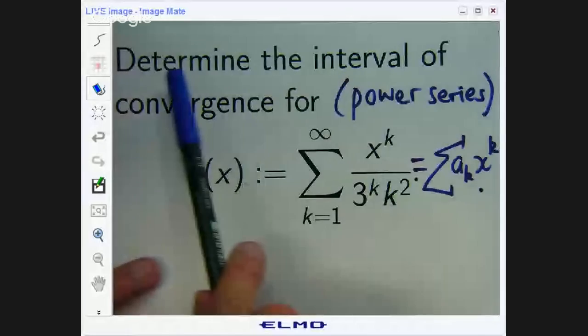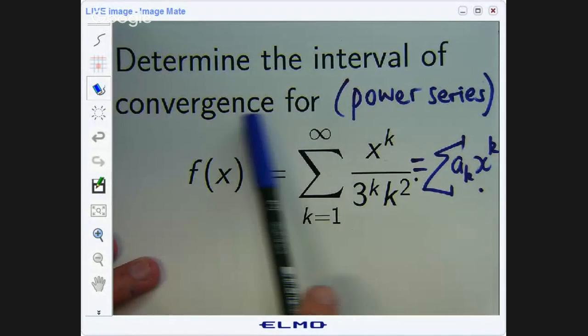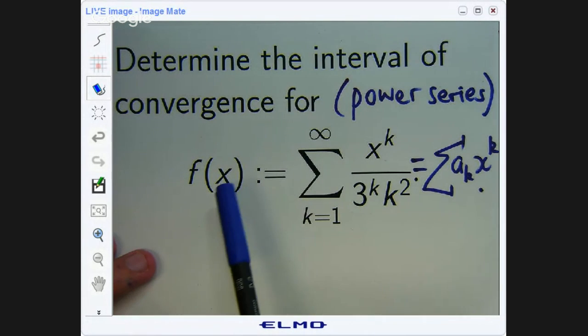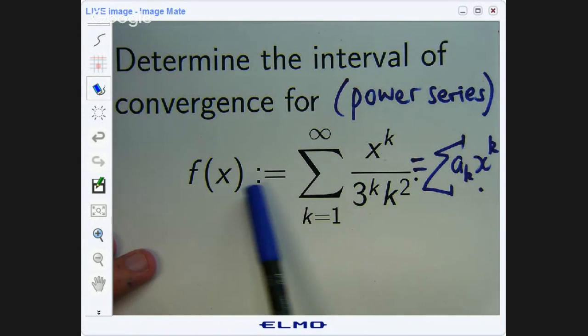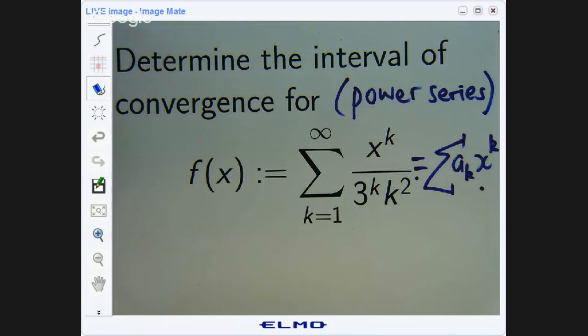Now the reason that I've defined that function f of x is because it gives you a hint of what the question is actually asking. The question is actually asking you to calculate the domain of f. What values of x make f of x make sense? When we're asked to determine the interval of convergence for this power series, we want to calculate the domain of this function. So how do we do it? We use an idea called the ratio test.